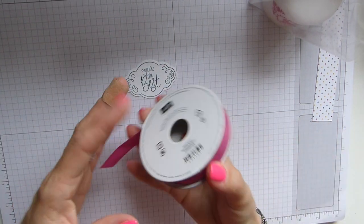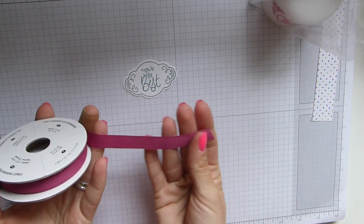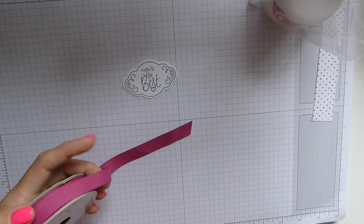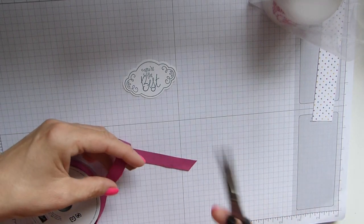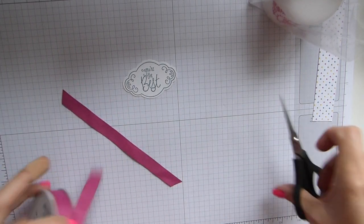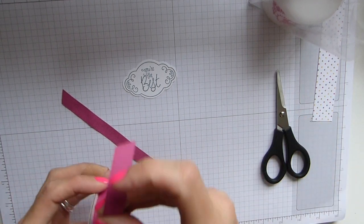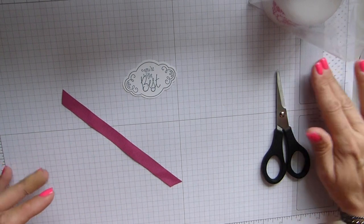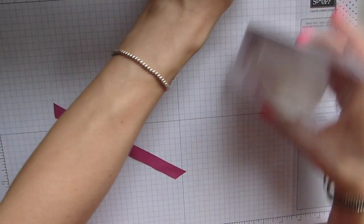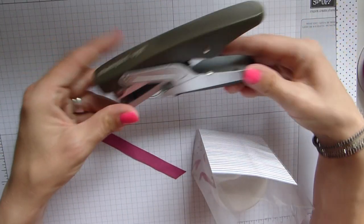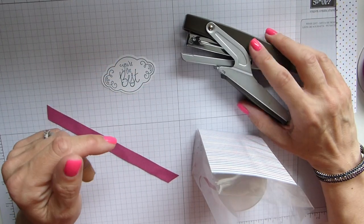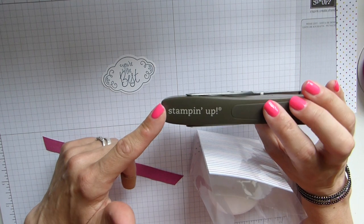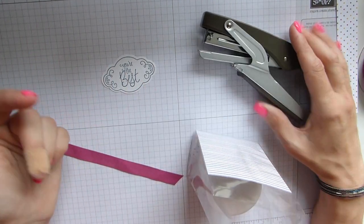Then this beautiful finely woven ribbon which I think is just so pretty. You just need a small length of that, again this is in berry burst. In fact they actually come in all of the new ink colors so they all coordinate. I've got my stapler now. I think that this is being retired so if you haven't got one, get one because it's fabulous.